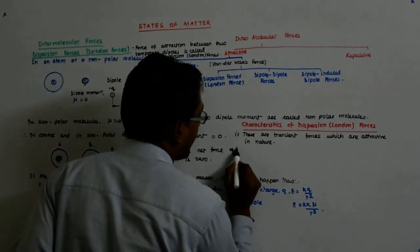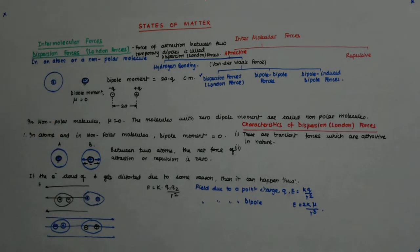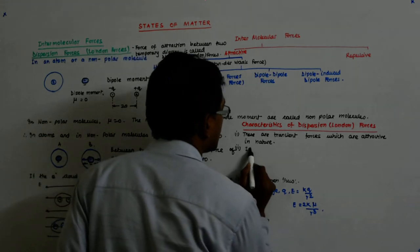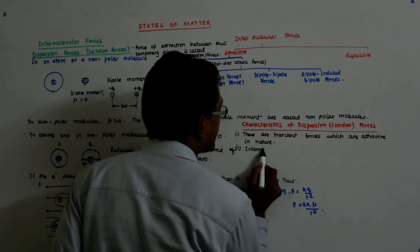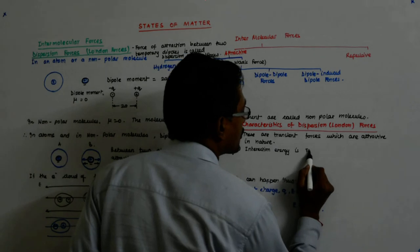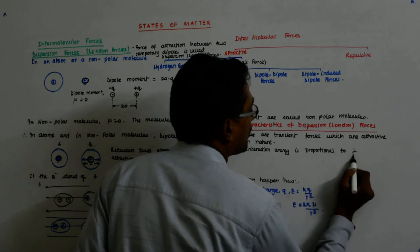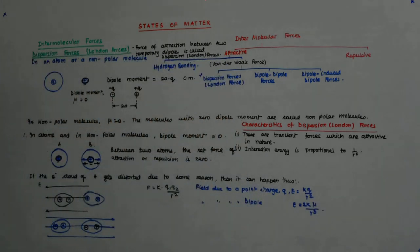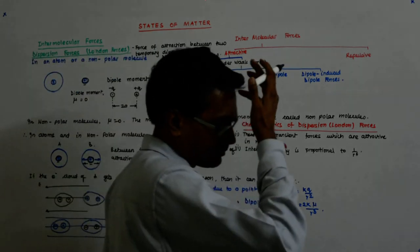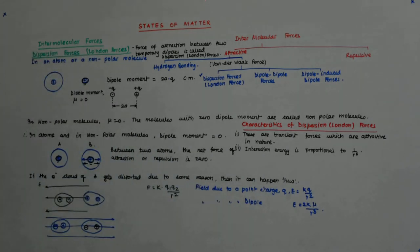And how do they behave? What is the force of their interaction? It will vary as 1 by r to the power 6. So, interaction energy is proportional to 1 upon r to the power 6. So, this interacts as 1 by r to the power 6, where r is the distance.